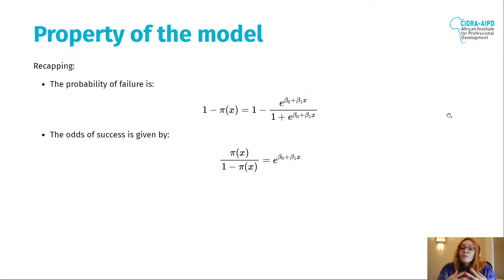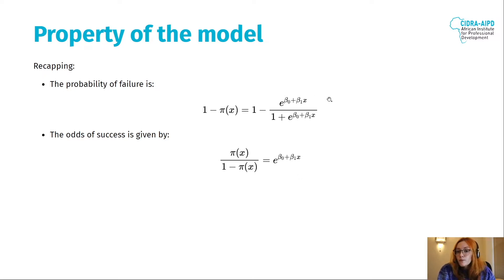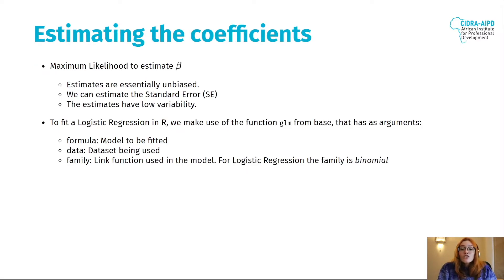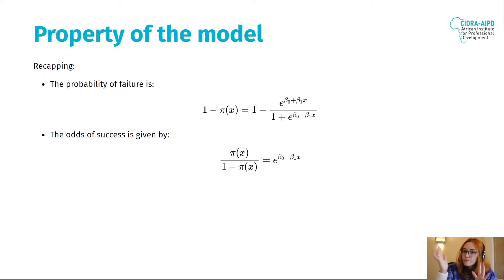The properties of the model: the probability of failure is one minus the probability of success. The odds of success is given by pi(x) over one minus pi(x). The beta zero represents the intercept, and beta one represents how much we vary by the independent variable — what is the impact of the size of the burn as x increases.